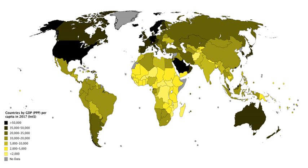For example, in countries with major business transactions occurring informally, portions of the local economy are not easily registered, and bartering may be more prominent than the use of money. GDP also understates true economic growth by not fully adjusting for quality improvements and new products. Although computers today are less expensive and more powerful than computers from the past, GDP treats them as the same products by only accounting for the monetary value. The introduction of new products is also difficult to measure accurately — even the richest person in 1900 could not purchase standard products such as antibiotics and cell phones that an average consumer can buy today.